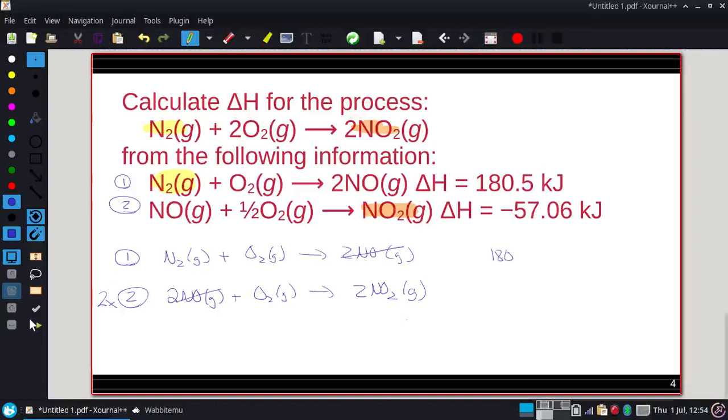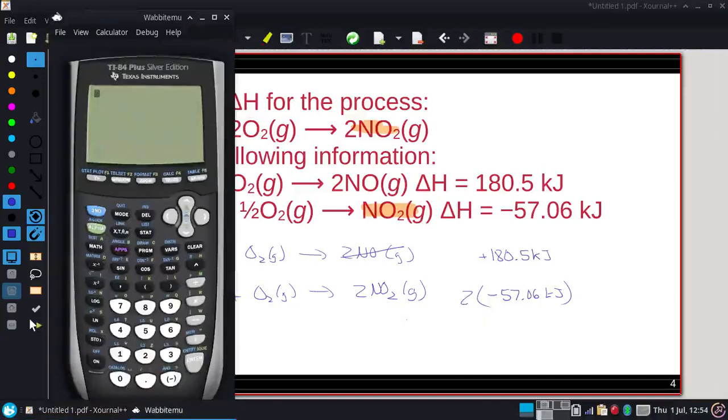Therefore, we can add these equations and the delta Hs. So that's 180.5. I didn't do anything with equation 1, so I'm not going to do anything with that value. And equation 2, which was negative 57.06 kilojoules. Since I doubled it, I will be doubling its value. So these two together, 180.5 plus 2 times negative 57.06.